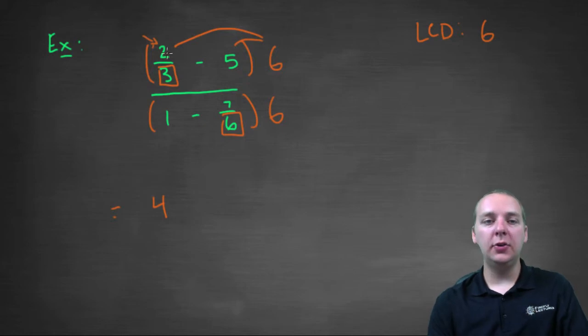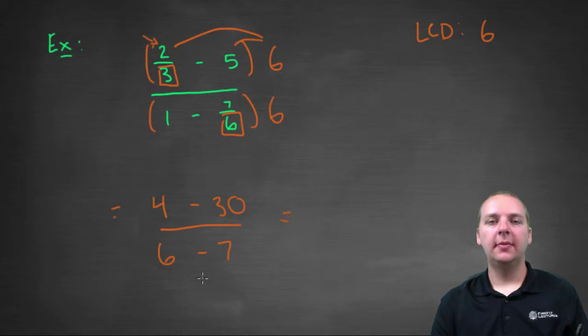To say it another way, two-thirds times six is four - that's basically what we're saying. You could have also done six times two is twelve, twelve divided by three is also four. There's a dozen different ways you could say it. Minus five times six, which is thirty, divided by your denominator: six times one is six, and six times seven-sixths would be seven. So you get this guy here. Notice with this new expression right here, there are no more fractions within the numerator or denominator, so it's not a complex fraction.